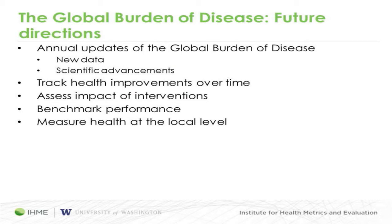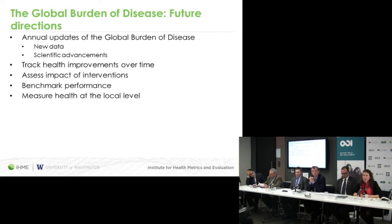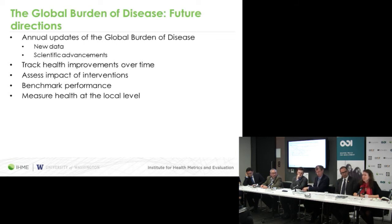Going forward, the burden of disease study will be updated annually and will be a powerful tool for decision making. We'll be incorporating new data every year as it becomes available, including methodological breakthroughs or new evidence about the effects of air pollution on health. We can also use it to track health improvements over time and assess the impact of different interventions. Furthermore, countries can use this tool to benchmark their performance in health compared to neighboring countries or countries at a similar economic level of development. GBD is just a starting point — the country-level results can be used to delve down to the local level to see disparities across a country.